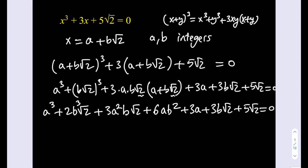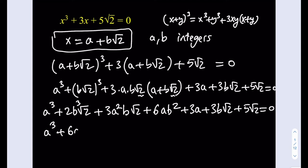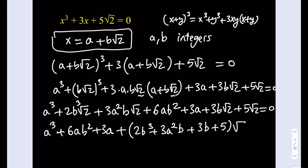My goal is to find the values of a and b from this equation. Since all the radicals are simplified, I'm going to put the non-radical terms together and factor out √2 from all the radical terms. The non-radical part is: a³ + 6ab² + 3a. The radical part, factoring out √2, is: 2b³ + 3a²b + 3b + 5. The whole expression equals 0.